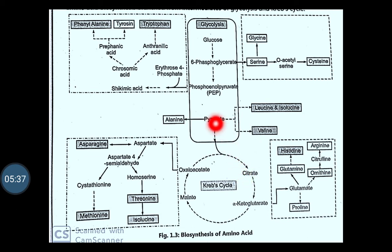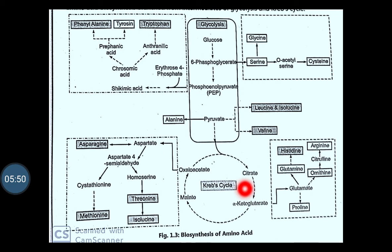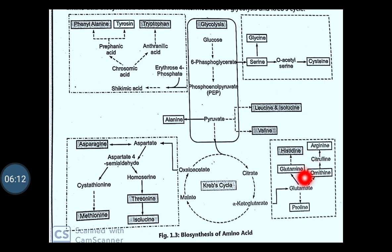The pyruvate also forms acetyl-coenzyme A and enters into the Krebs cycle, also called the citric acid cycle or TCA cycle. For example, the alpha-ketoglutarate which is formed acts as a precursor for the biosynthesis of glutamine, and from glutamate, amino acids such as glutamine, histidine, ornithine and arginine get biosynthesized. Proline will also get biosynthesized from glutamate.